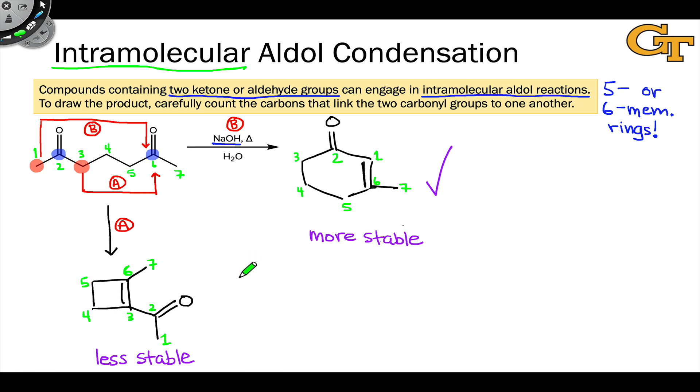And so overall the primary lesson of this slide is that we can use intramolecular reactivity to selectively perform a mixed aldol condensation within a single molecule. And the key principle really is these especially privileged ring sizes. 5 or 6-membered rings form selectively because they're relatively strain free.